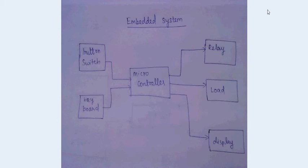So for example, embedded systems include washing machine, digital camera, calculators, cell phones, microwave oven, etc.